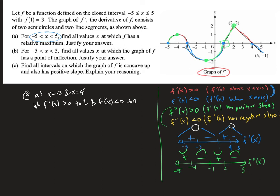For Part B, find all values of x where the graph of f has a point of inflection. That's where the second derivative changes sign. Looking at the second derivative sign line, that happens at x = -4, x = -1, and x = 2. Those are the locations of the points of inflection. Justification: the second derivative changes sign at those values.